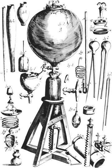Alessandro Volta began investigating pneumatic chemistry in 1776 and argued that there were different types of inflammable air based on experiments on marsh gases. Pneumatic chemists credited with discovering chemical elements include Joseph Priestley, Henry Cavendish, Joseph Black, Daniel Rutherford, and Carl Scheele. Other individuals who investigated gases during this period include Robert Boyle, Stephen Hales, William Brownrigg, Antoine Lavoisier, Joseph-Louis Gay-Lussac, and John Dalton.